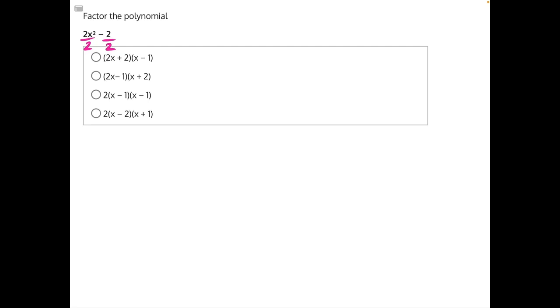So if we divide our first term by 2, these 2s will cancel, leaving us with x squared. Then, negative 2 divided by 2 will leave us with negative 1. That'll be in parentheses multiplied to the 2 that we factored out.